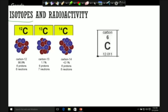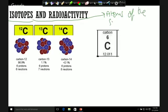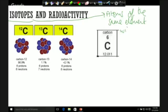Isotopes are atoms with different numbers of neutrons. So they are atoms of the same element with a different number of neutrons.